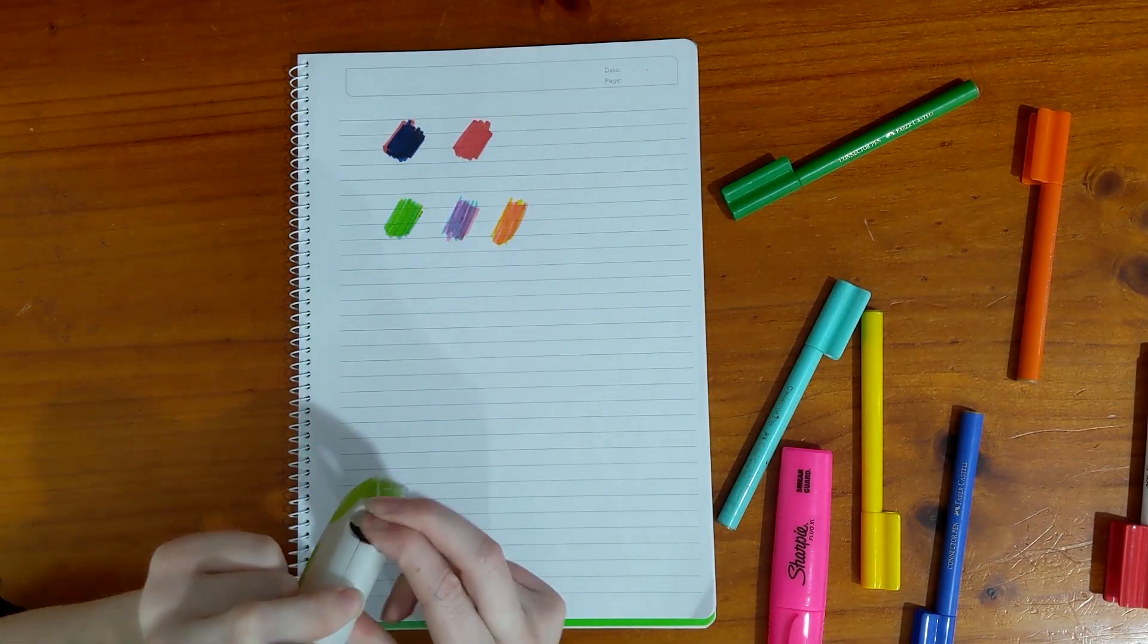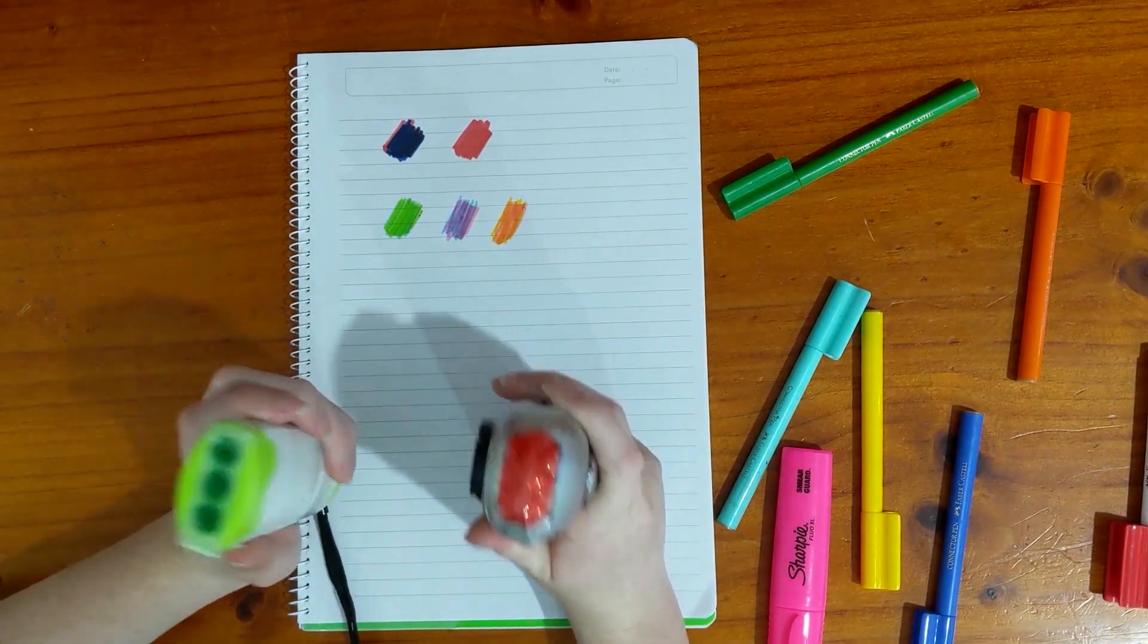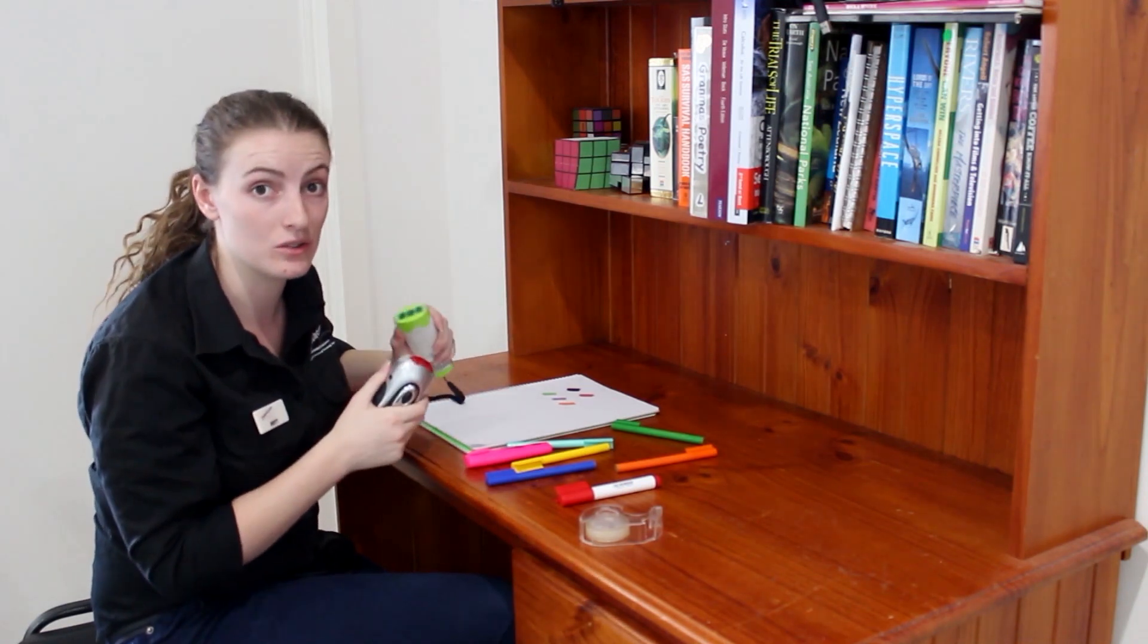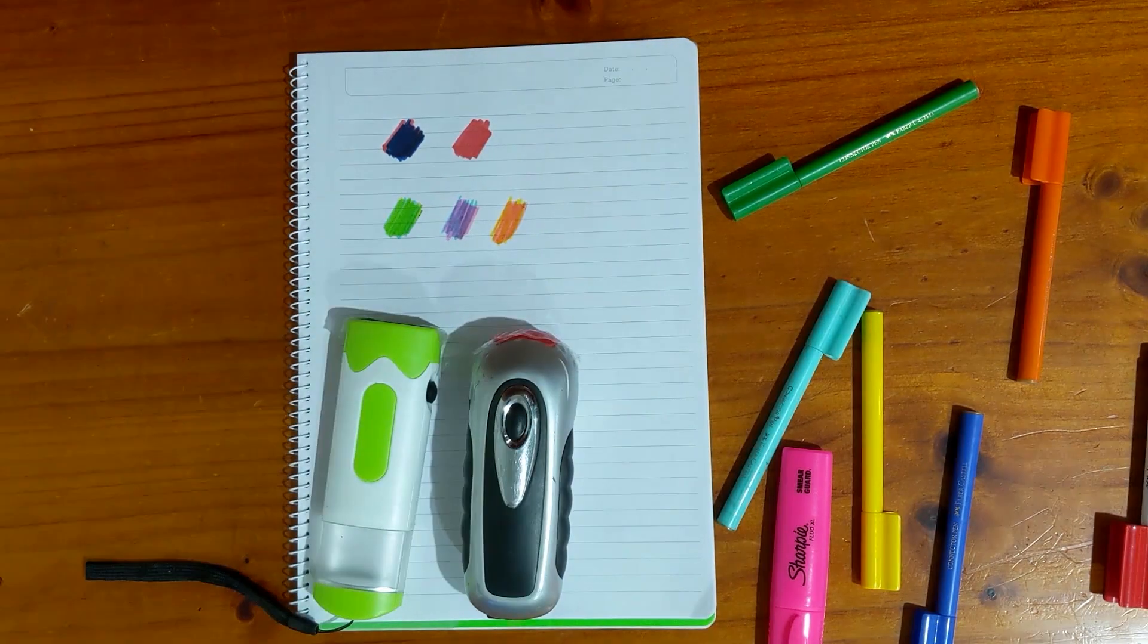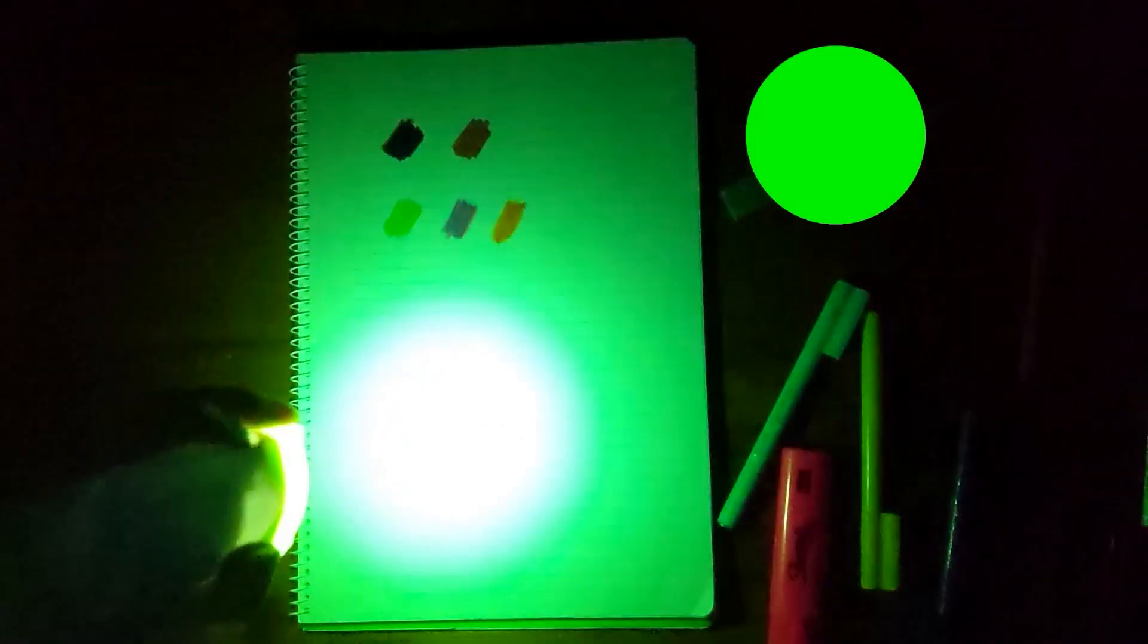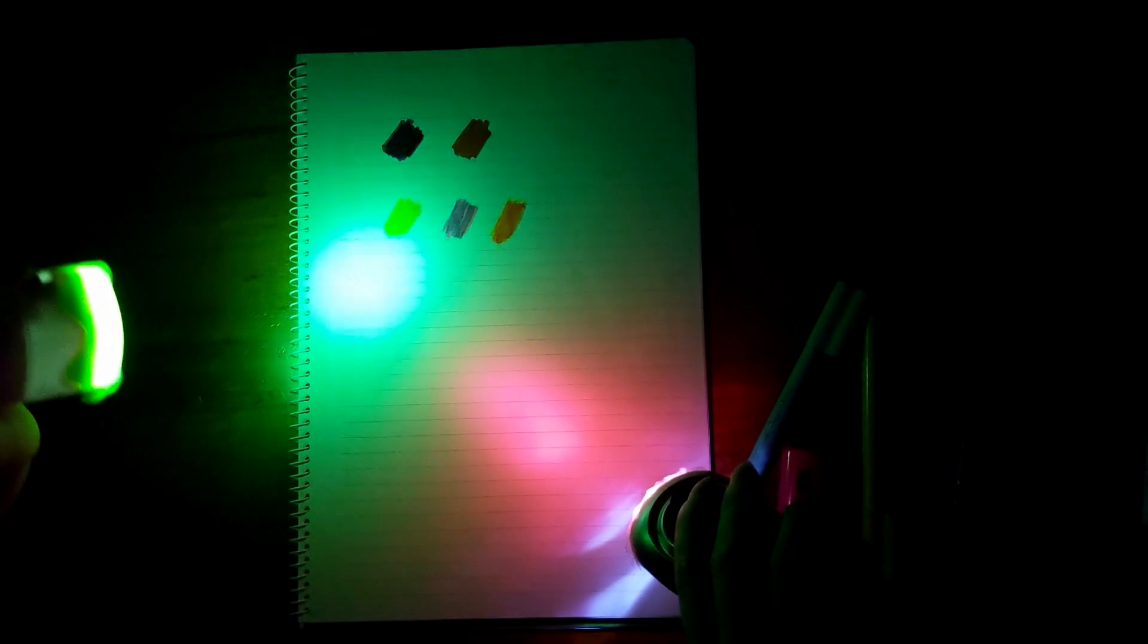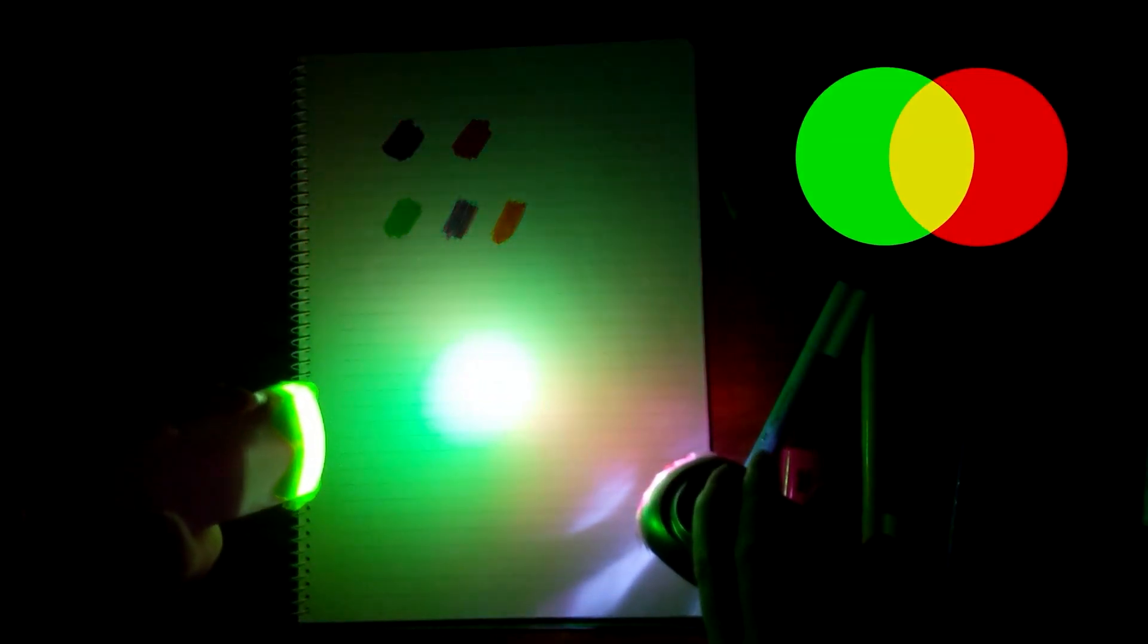Now if I get two different colours, green and red, and I add them together, instead of taking away from the white light, they're going to add new colours onto the page. I'm just going to turn off the lights and we have my red torch. I add them together, we actually get yellow light.